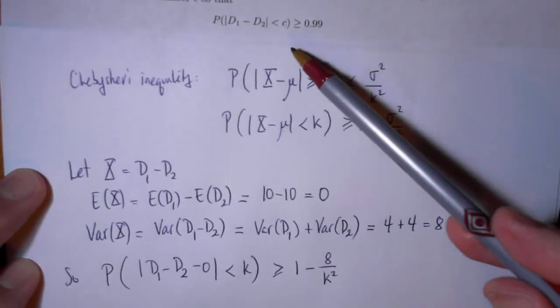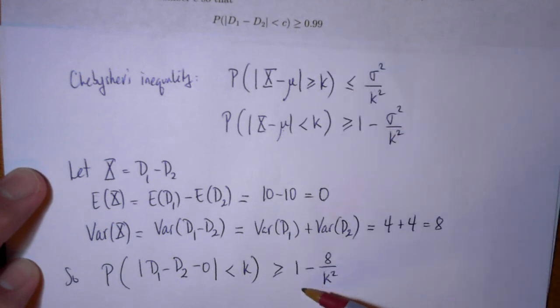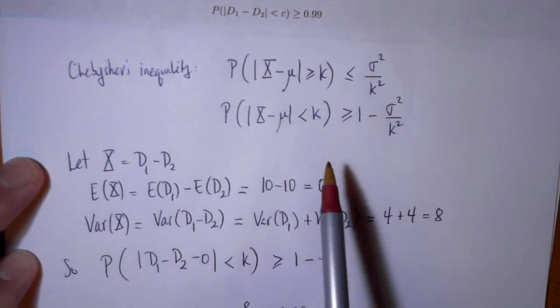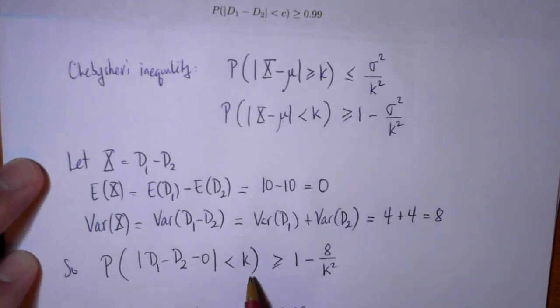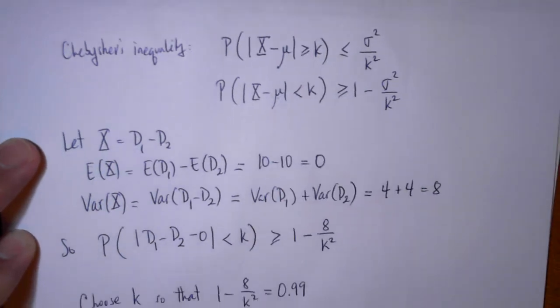I need to choose k so that 1 minus 8 over k squared is equal to 0.99. I want 0.99 here to match the right hand side over here. So if I solve for k, then that gives me the number, if I solve for k here by matching this to be this, then the k here will be the c up here and I'm done.